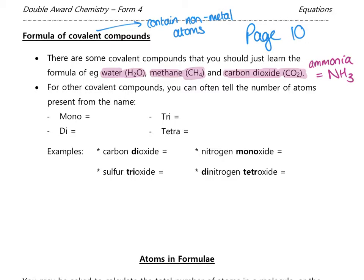Other covalent compounds come with little prefixes that tell us how many atoms we have. Mono means one — think of a monobrow, essentially one eyebrow. Di means two, tri means three, and tetra means four. If you have one of these prefixes in front of an element's name, that tells us how many atoms of that element we have.